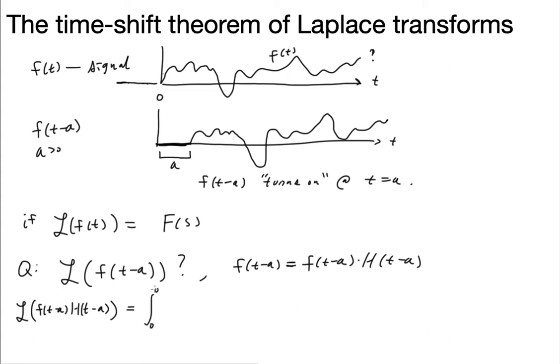And without much extra work, you can find out that really we could set this integral up to be just f of t minus a, starting at a, e to the negative st dt.